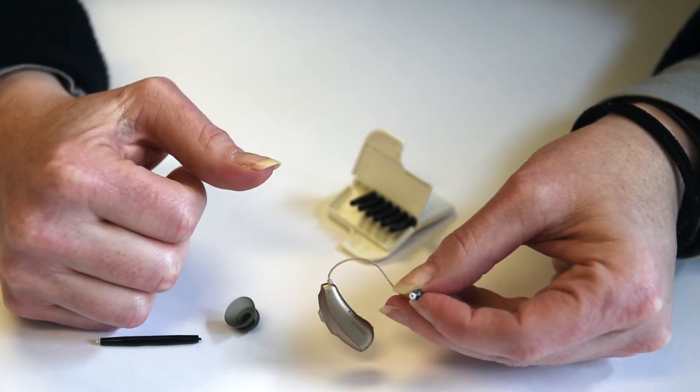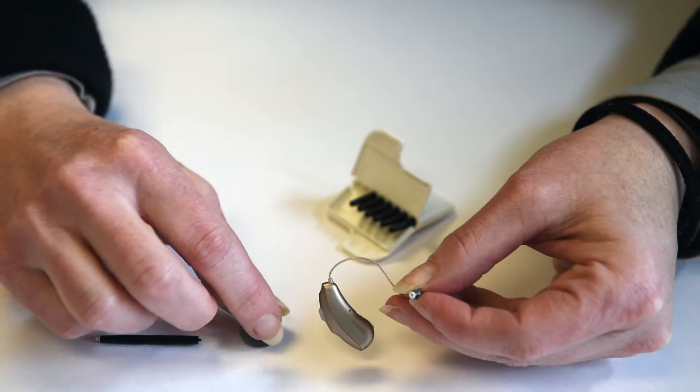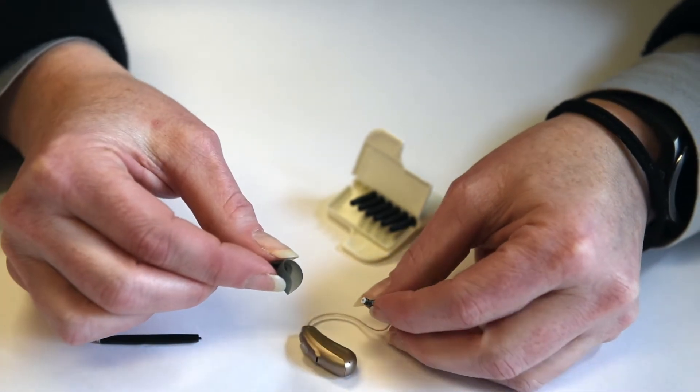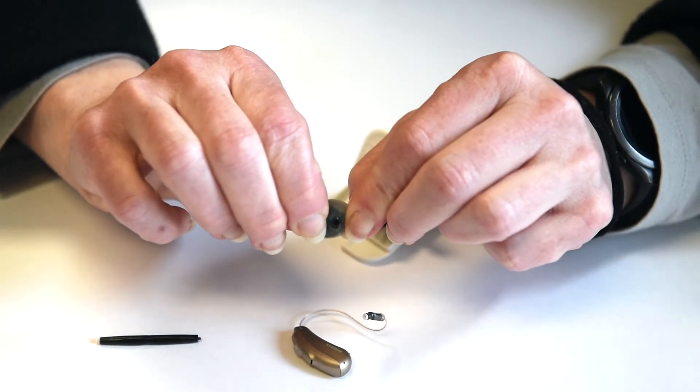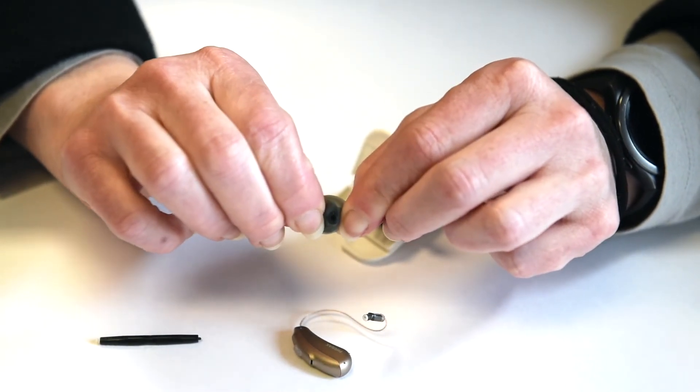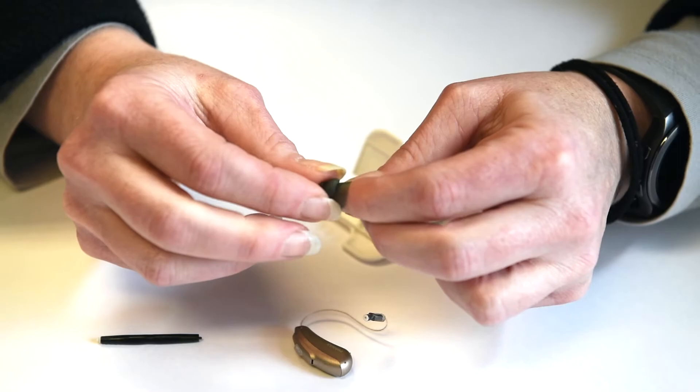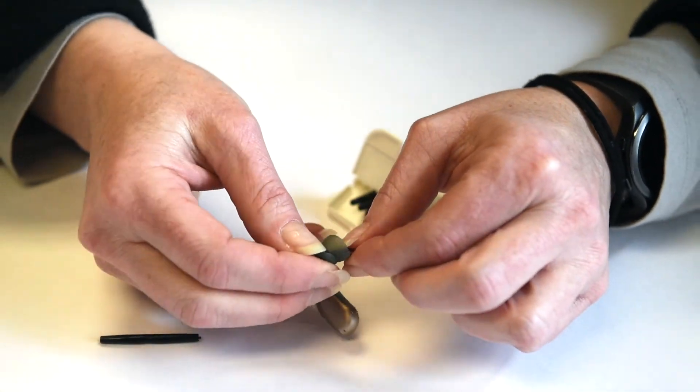The last thing we need to do is just put the rubber tip back on. It's hard to see, but if you look inside, there's actually a little hole there. You're going to fit that over the end of the hearing aid.